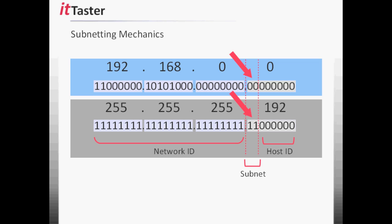Notice the number of host bits is reduced. Also note that the subnet mask has changed from 24 bits to 26 bits — 255.255.255.192 in dotted decimal notation. This is the new subnet mask that must be applied to our new subnets.